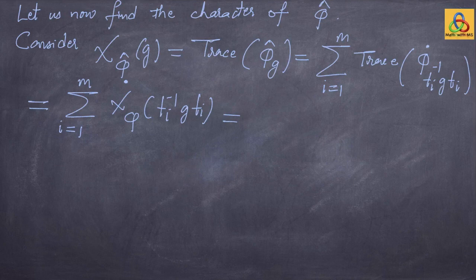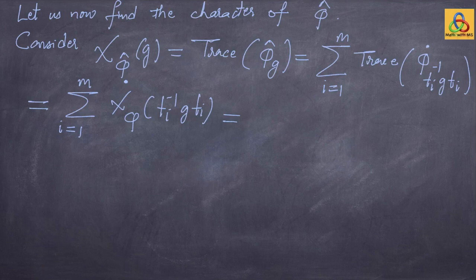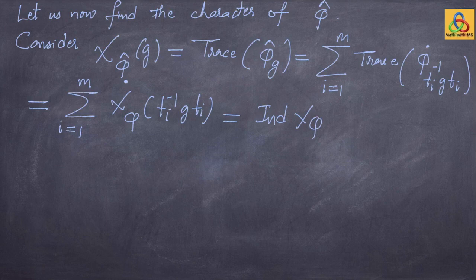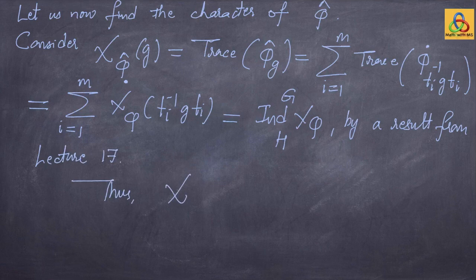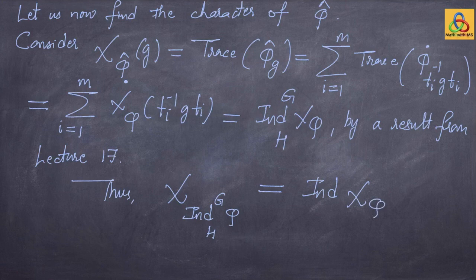Recall a result from lecture number 17: if you have a class-preserving function on a subgroup H and define its induction, the induced function can be written as a sum of the dot-values of that function as you run over the coset representatives. Therefore, this sum is the same as the induction of chi_phi from the subgroup H to the subgroup G, by that result from lecture 17. So the character of the induction of phi from H to G is the induction of the character of the original representation phi from H to G. This proves the theorem.